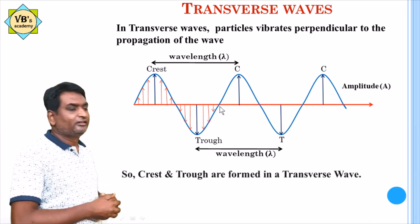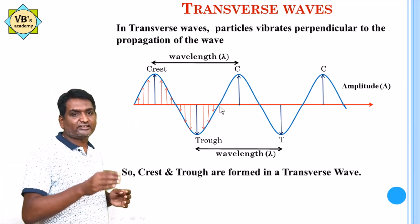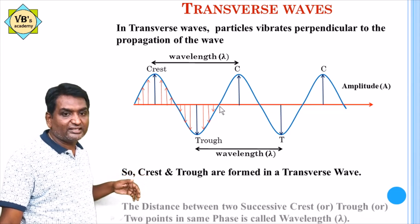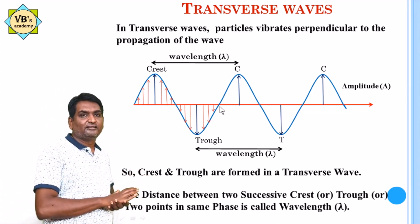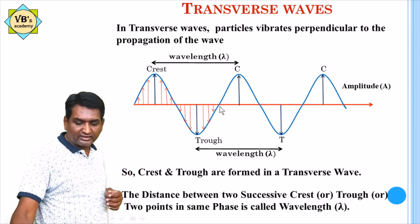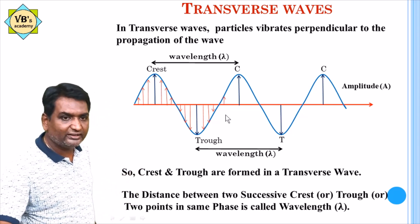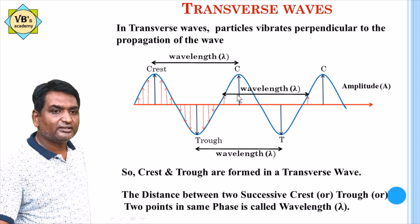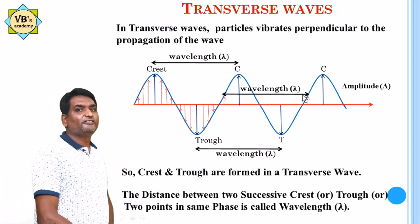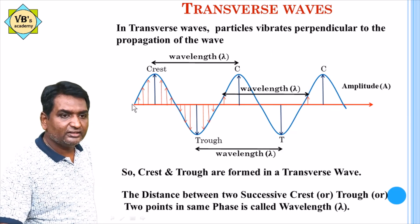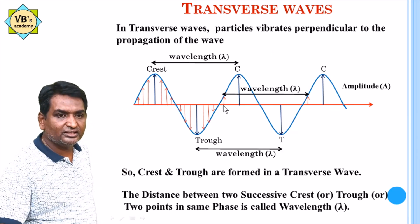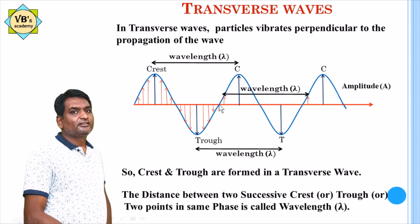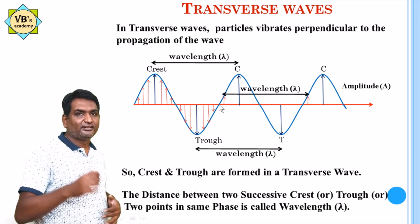In transverse waves, crests and troughs are found. The distance between two successive crests or troughs is called wavelength lambda. More generally, the distance between two points which are in phase with each other is the wavelength lambda — this applies not only to crests and troughs but to any two points in the same phase.